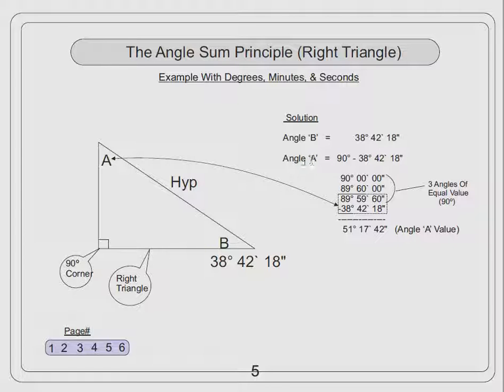The solution for angle A, the unknown value, is 90 degrees minus 38 degrees, 42 minutes, 18 seconds. So again, we write down 90 degrees, zero minutes, zero seconds. We take one degree away from 90, and write it down here as 89. We take that one degree and convert it to minutes, and write it down as 60 minutes, because one degree equals 60 minutes.